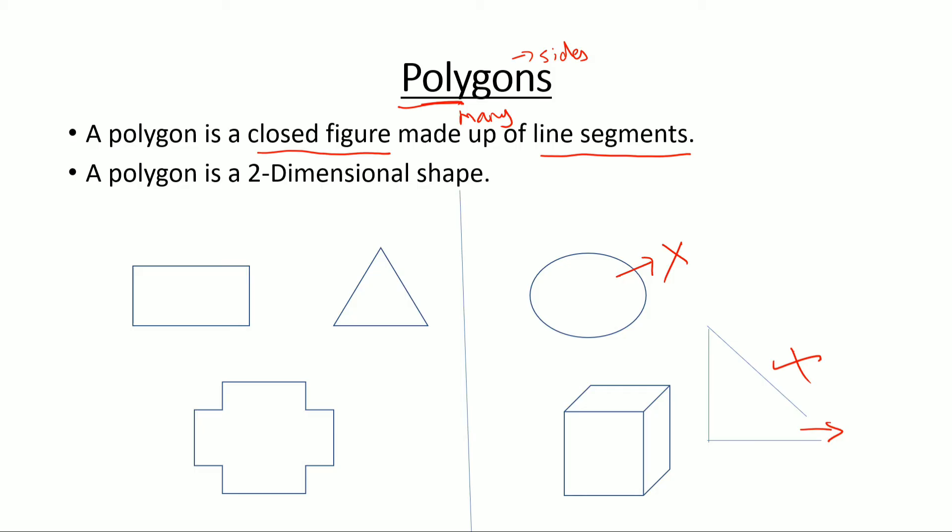A polygon is a two-dimensional shape. That means if it's a 3D shape like a cube or keyboard, then that is also not a polygon.